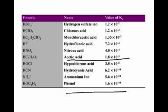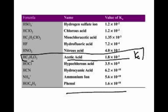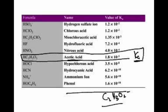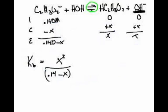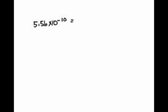Alright — acetic acid. Acetic acid's Ka value is 1.8 times 10 to the minus 5. Its partner is the acetate ion, C2H3O2⁻. I don't care about the Ka of acetic acid — I want the Kb of acetate. So Kw divided by 1.8 times 10 to the minus 5 equals Kb. That gives us 5.56 times 10 to the negative 10. Now plugging into our equation: 5.56 times 10 to the minus 10 equals X squared over 0.140 minus X.